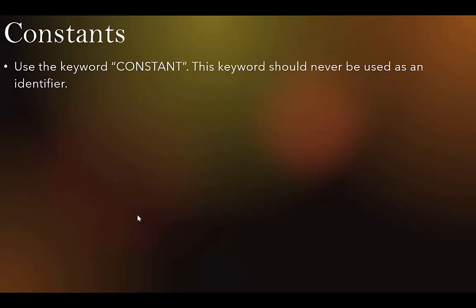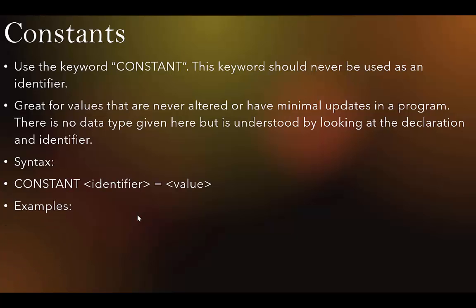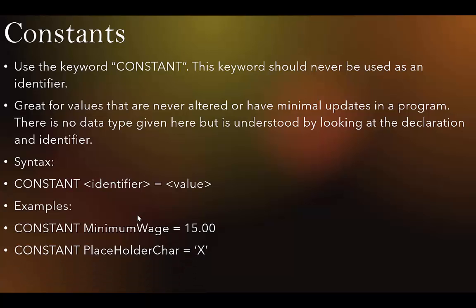Constants use the keyword CONSTANT, which should never be used as an identifier. Constants are great for values that are never altered or have minimal updates in a program. There is no data type given — it is understood by looking at the value. The syntax is: CONSTANT identifier ← value. For example: CONSTANT MinimumWage = 15.00, CONSTANT PlaceholderChar = 'X', CONSTANT PlaceholderName = 'username'.